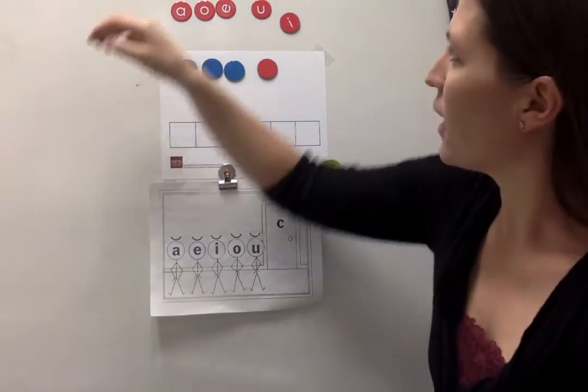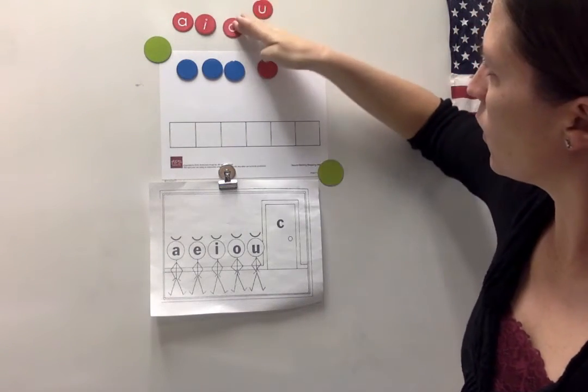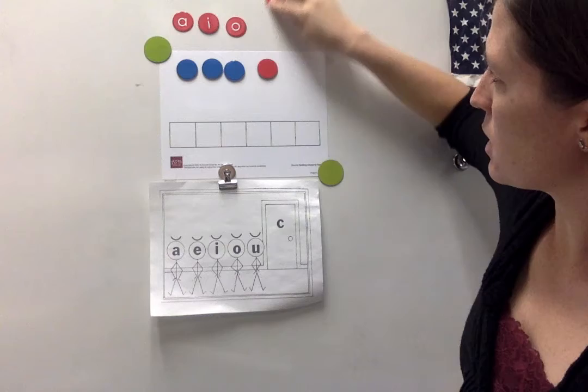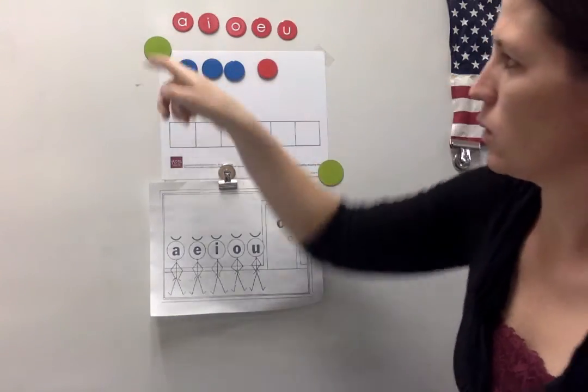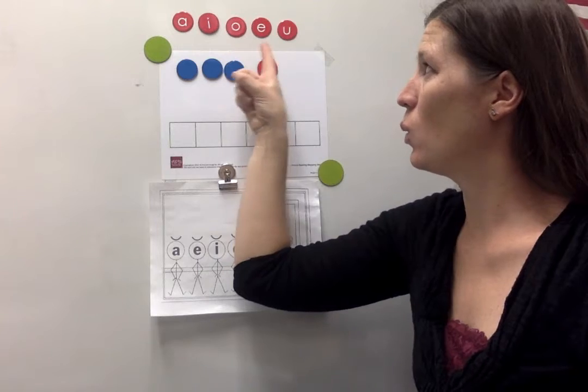Okay, I have A, I, O, E, U. We have five vowels. A, I, O, E, U.